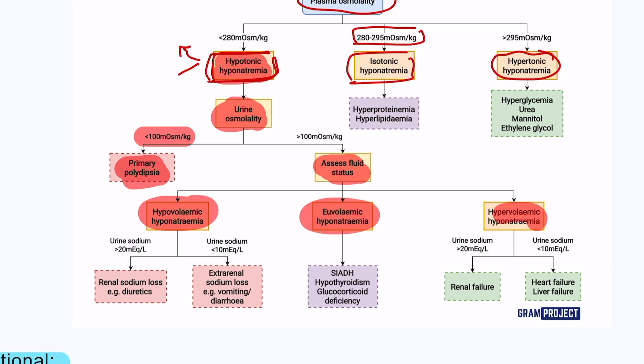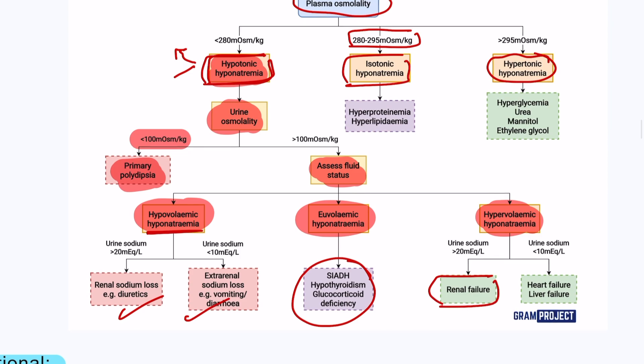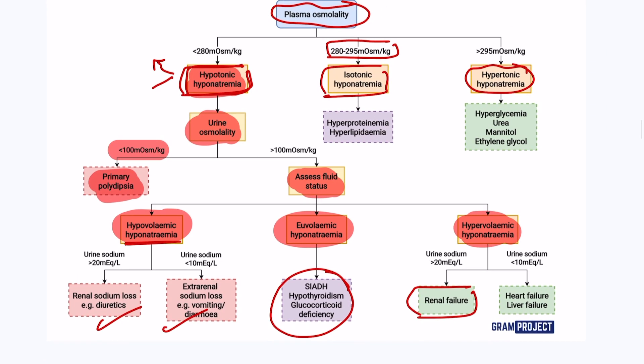Hypervolemic includes renal failure, heart failure, and liver failure. Euvolemic includes SIADH. Hypovolemic hyponatremia could be due to renal loss with the patient dehydrated or the diuretic phase of renal failure. If it's hyperosmolar, that means the patient has taken hyperosmolar fluid or hypertonic fluid such as mannitol, or the patient is hyperglycemic.